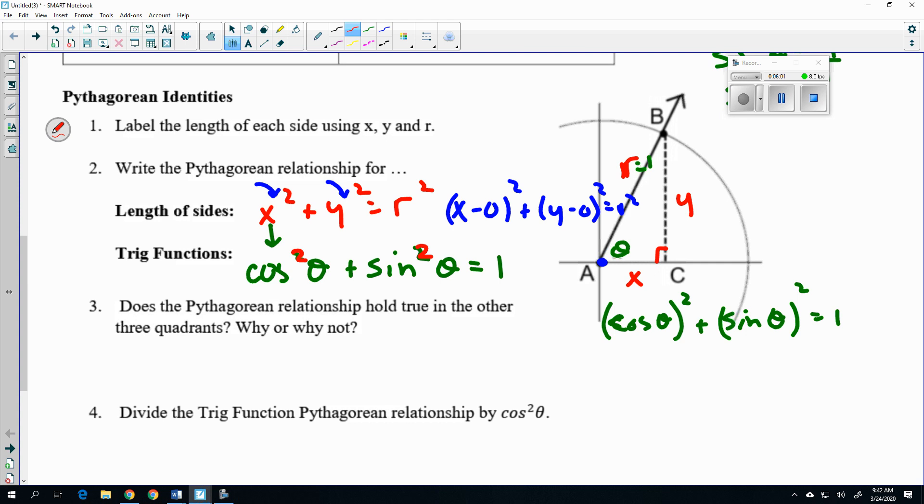So we're going to finish this page. Does the Pythagorean relationship hold true in the other three quadrants? Well, what do you think? Well, because I'm squaring things, even if I had a negative, it would be turned into a positive. So we have the square idea that's going to turn everything into a positive value. And it's always going to be a right triangle. So yes, it does hold true.